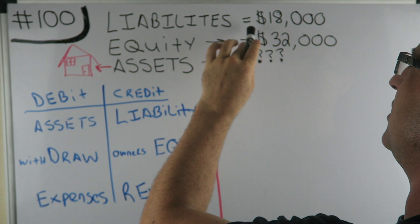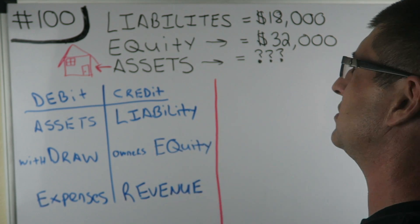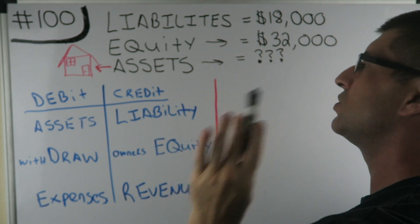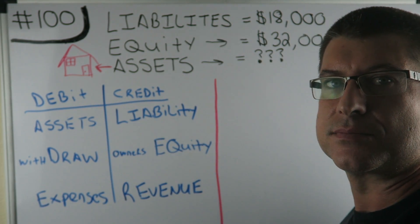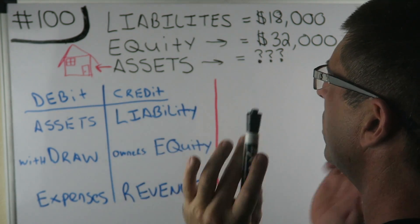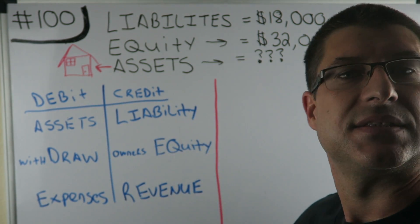Liabilities equal $18,000. Equity equals $32,000. What are the assets?